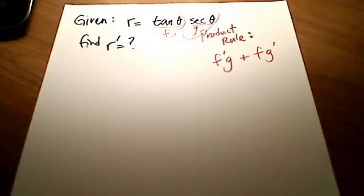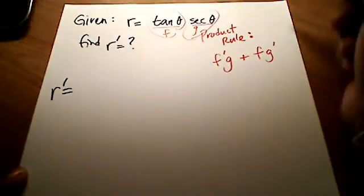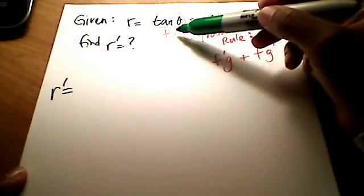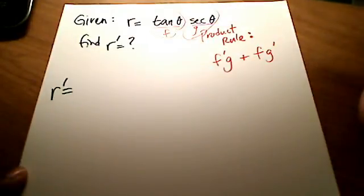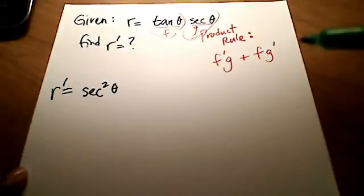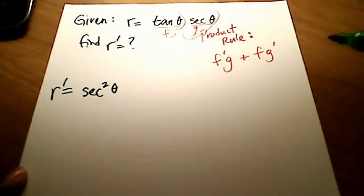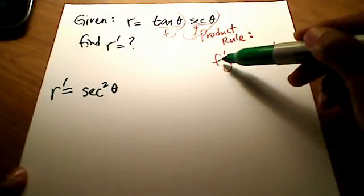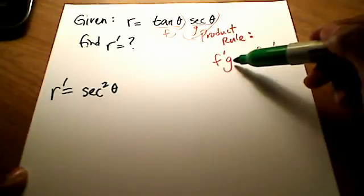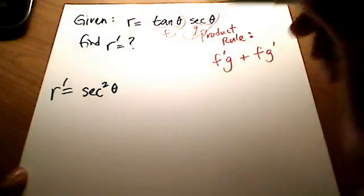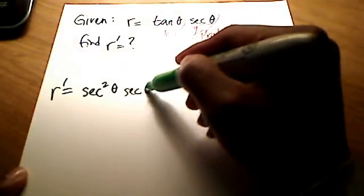So r prime is going to be equal to: give me the derivative of tangent. This is something you have to know, memorize, or look up on a table. The derivative of tangent is secant squared — so secant squared of theta — times g, so it's f prime times g, which is just secant theta.